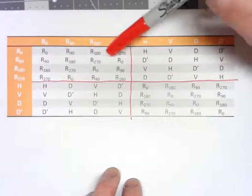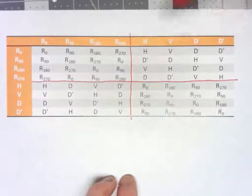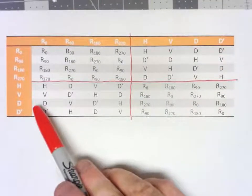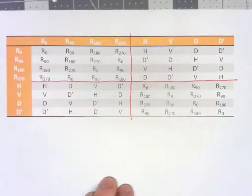Here we have four different rotations, the four different reflections, all in that row. Here we have the four different reflections, the four different rotations, all in that row.